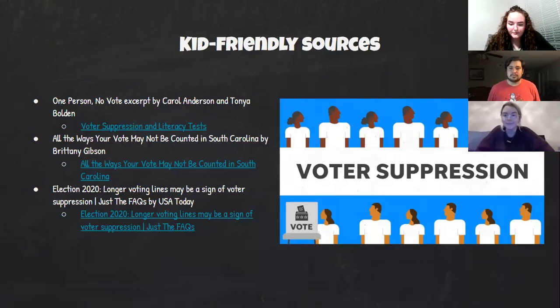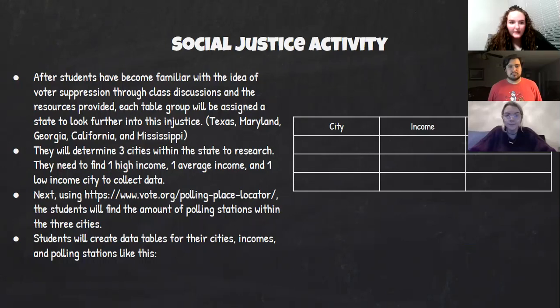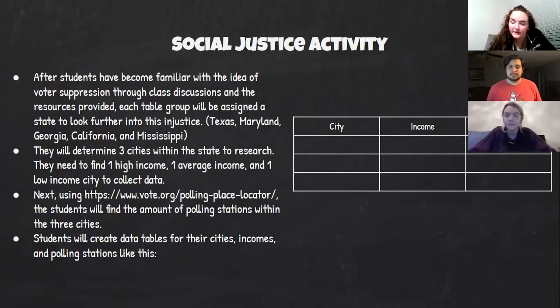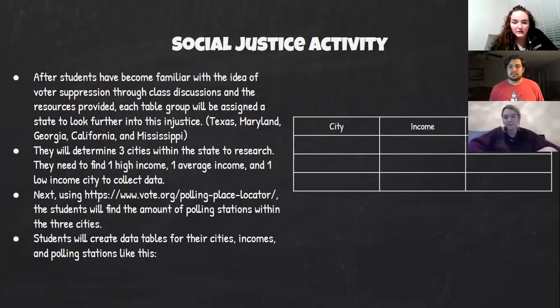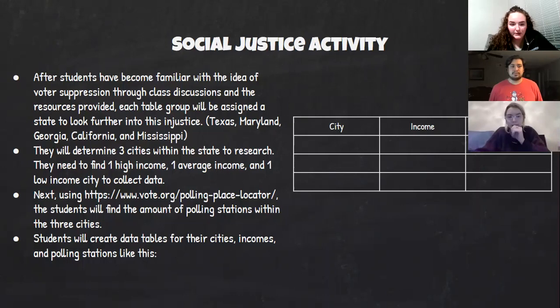Our activity for this lesson has the class divided into groups, and each group will get a state. The states we chose are Texas, Maryland, Georgia, California, and Mississippi. We chose these states because each one is very different — for instance, Maryland is a very rich state whereas Mississippi is a very poor state, and we wanted to reflect that in the data. Each group will determine three cities in their state representing a high income, average income, and low income area, then find the number of polling stations within those cities using a polling place locator.